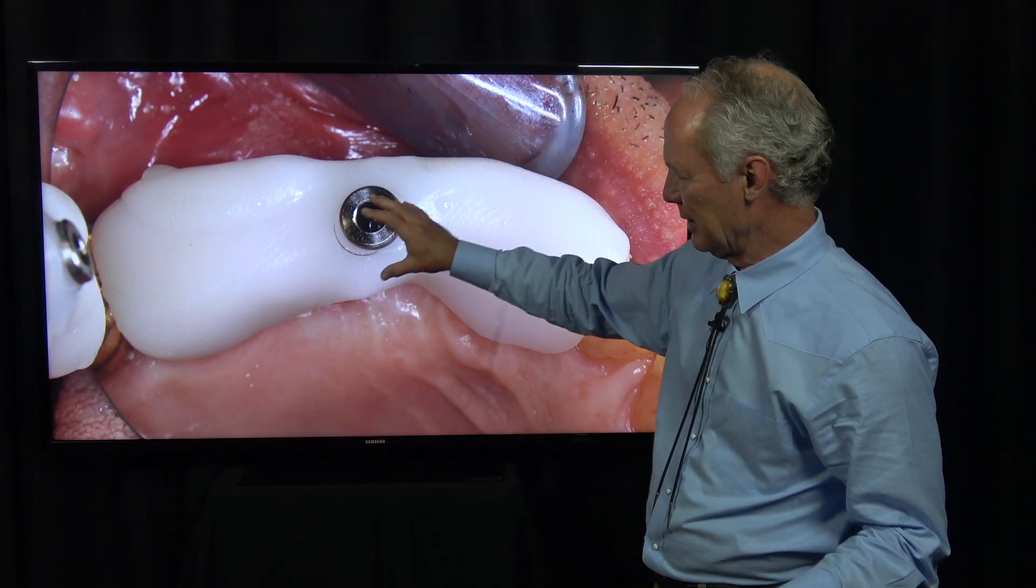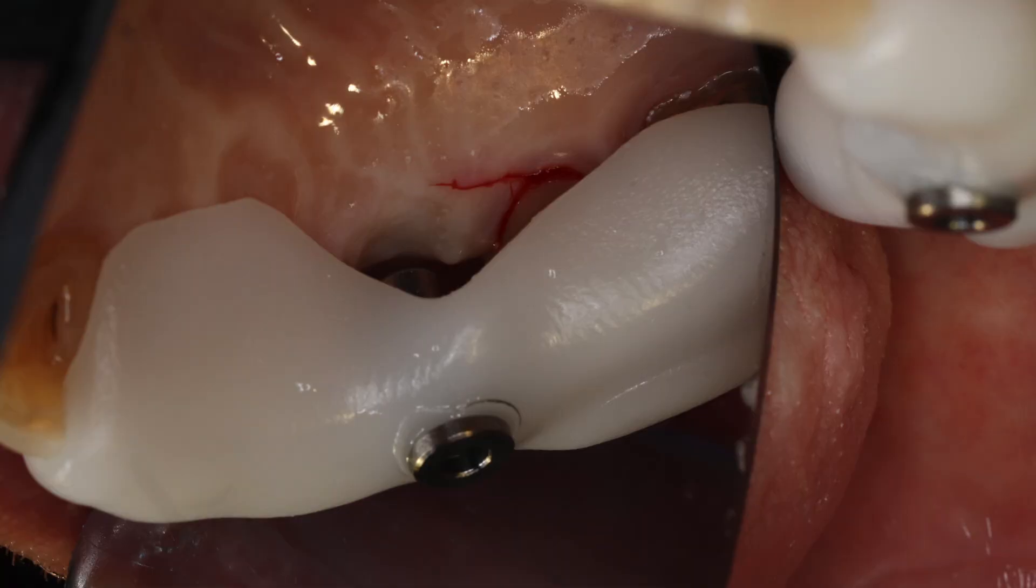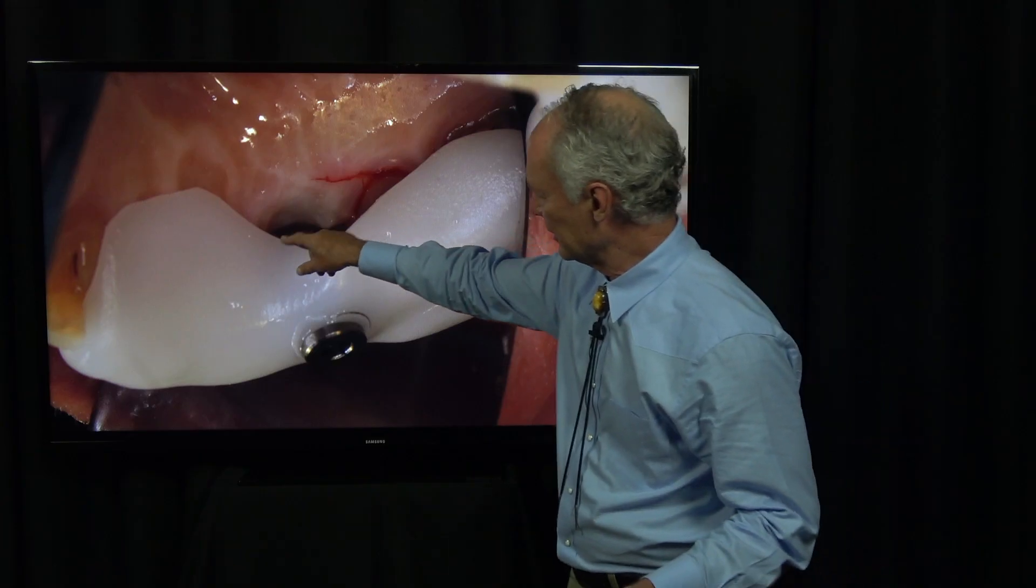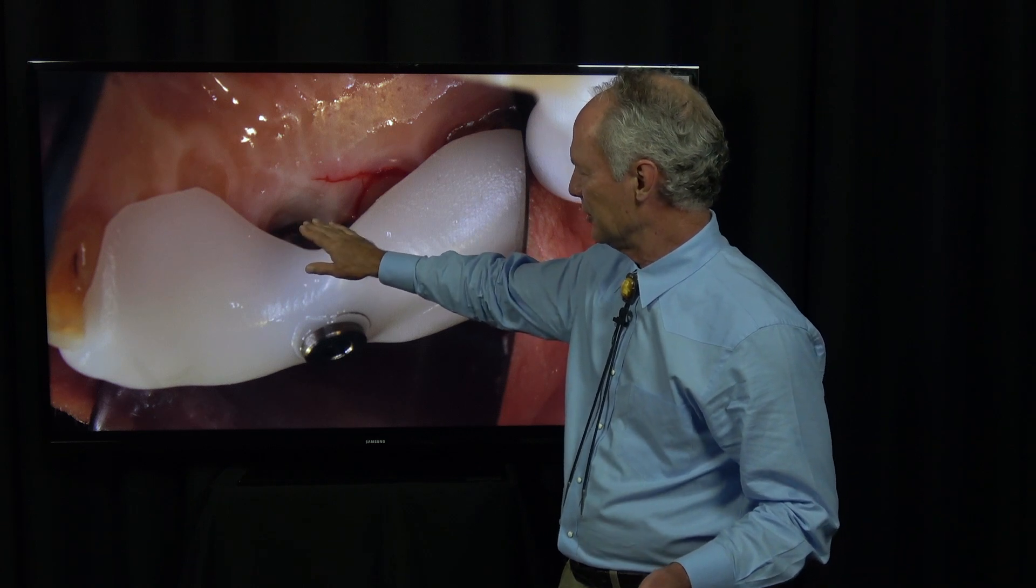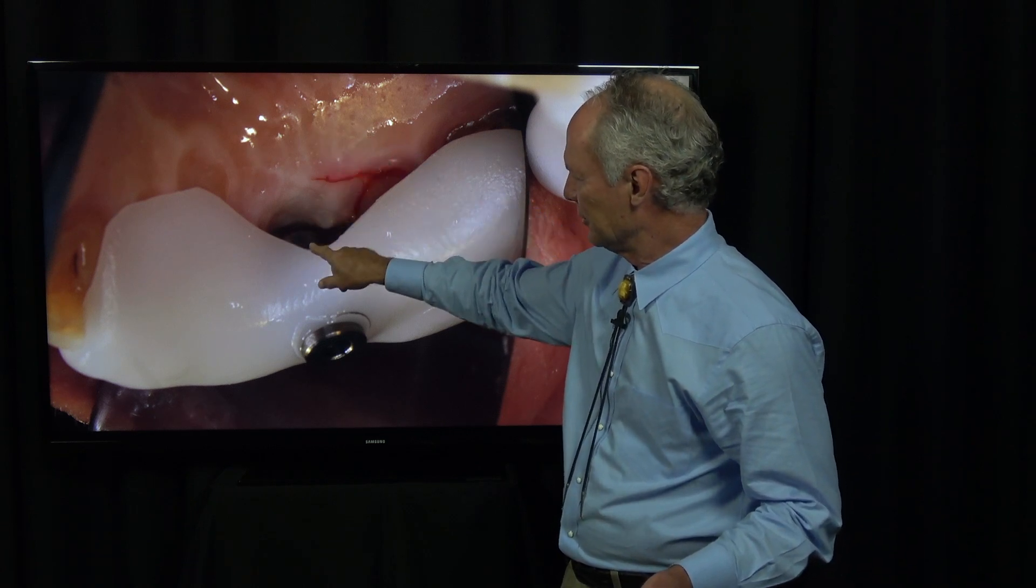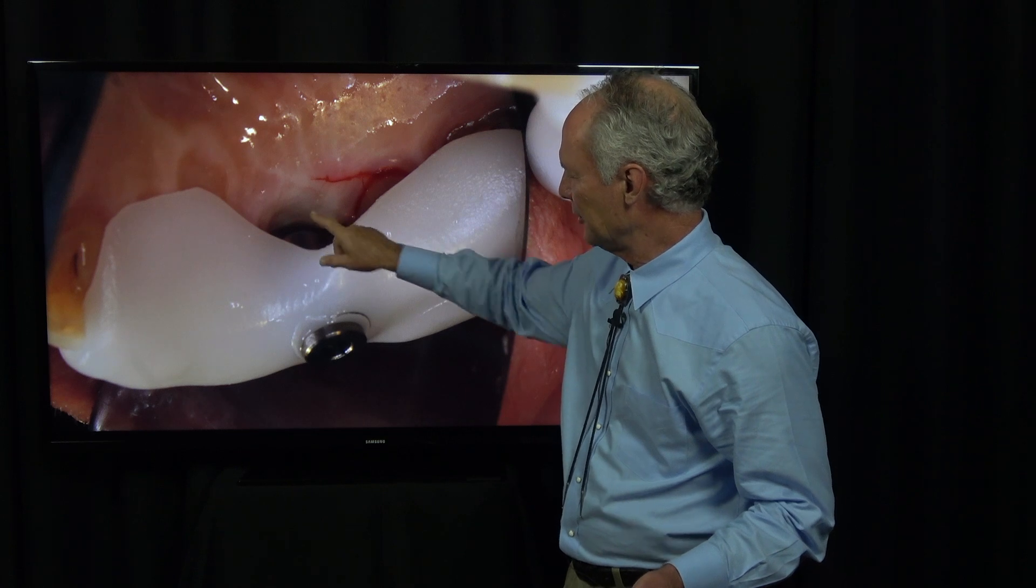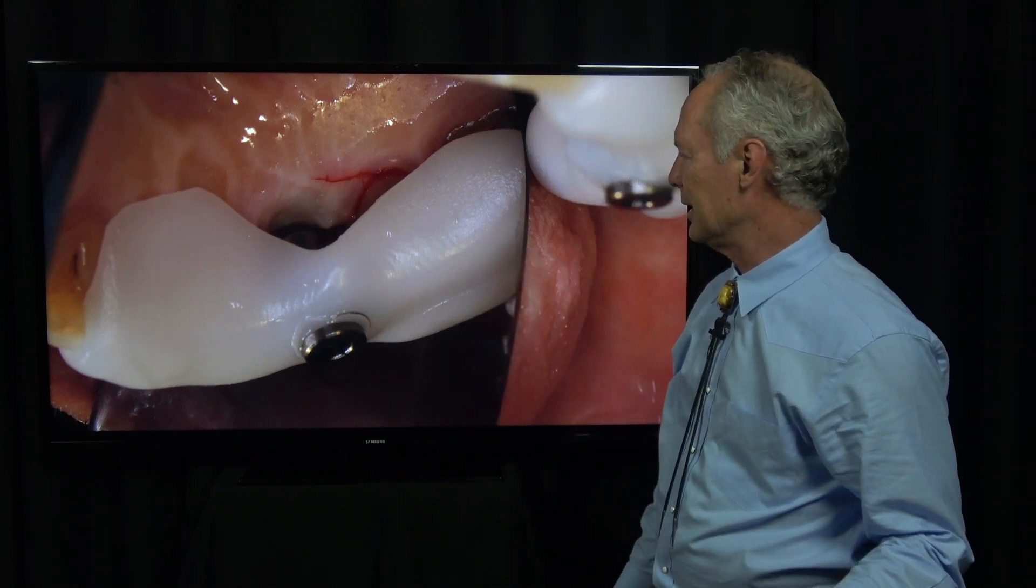This fits perfectly in the mouth. The nice thing is, you don't want this all the way down—you can go down to the tissue because you're going to reflect it. You want this as close to the tissue as possible.